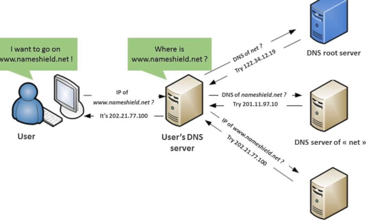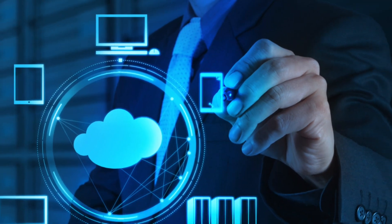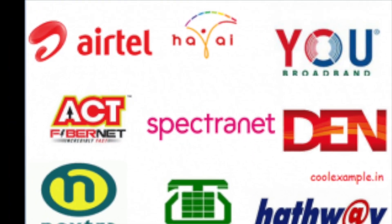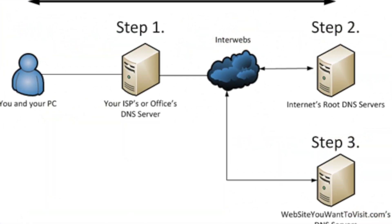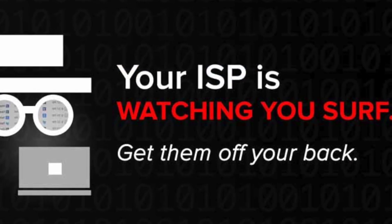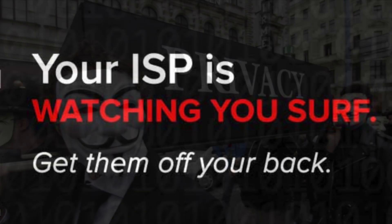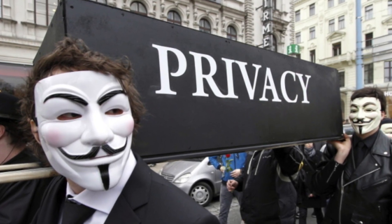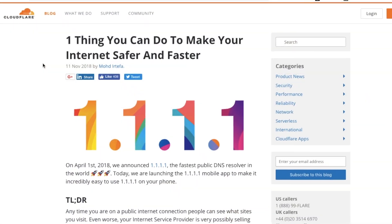When you normally browse the web, your ISP — the company which provides your internet service — can watch and track which websites you are visiting and what apps you are using on a daily basis. They can sell this data to advertisers to make money, so there is no privacy protection for us.